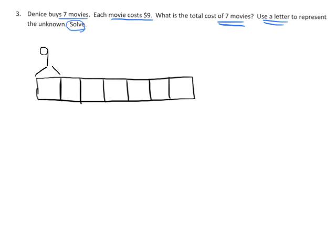And then, it says, what is the total cost? So that's this piece right here. And I'm going to put a question mark. Except, they don't want us to use a question mark. What they want us to do is use a letter. So I'm going to use the letter M. So instead of the question mark, I'm going to use the letter M for movies.